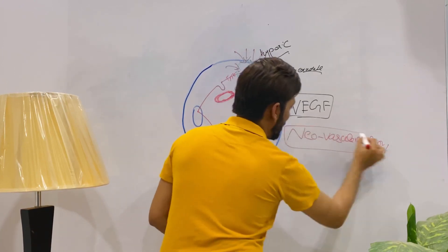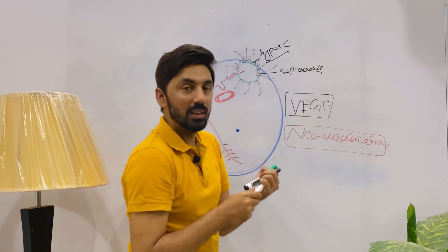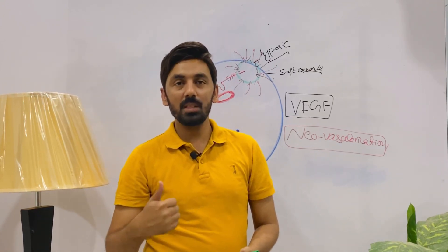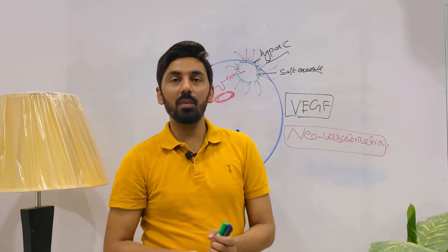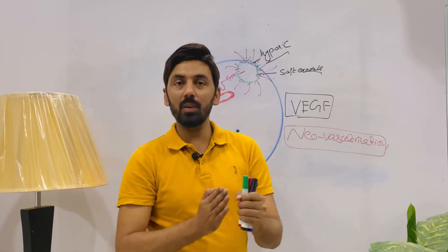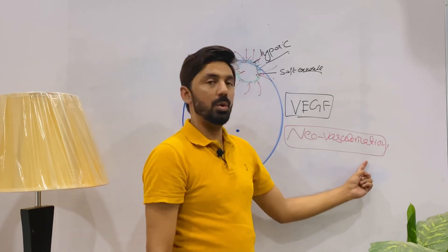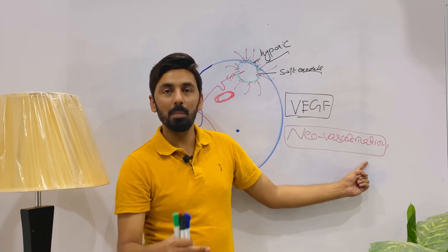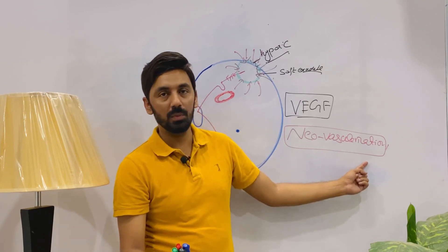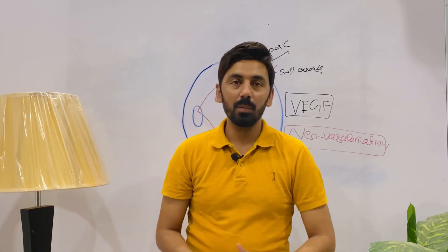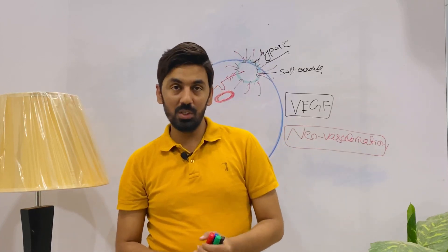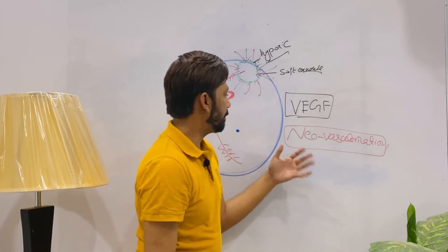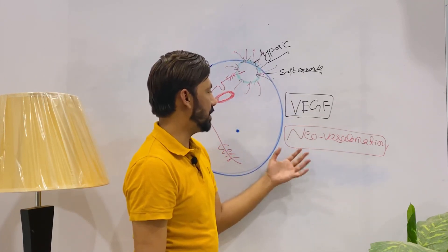Neovascularization is the cardinal sign and hallmark of proliferative diabetic retinopathy. This is why the condition is called 'proliferative' diabetic retinopathy — because 'proliferative' in this context means neovascularization. Now we will discuss the abnormal changes resulting from this neovascularization.